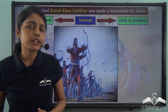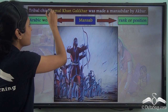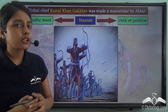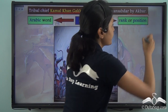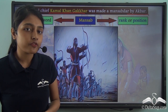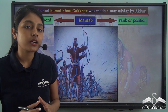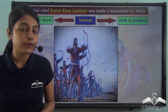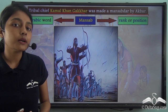Among the Gakkars chiefs, particular mention must be made of Kamal Khan Gakkars, because he was made a Mansabdar by the Mughal Emperor Akbar. So we learned that the Gakkars were predominantly located in the Punjab province, now in Pakistan, that they were landowners during the rule of Babur, and that their tribal chief Kamal Khan Gakkars was made a Mansabdar by Akbar.